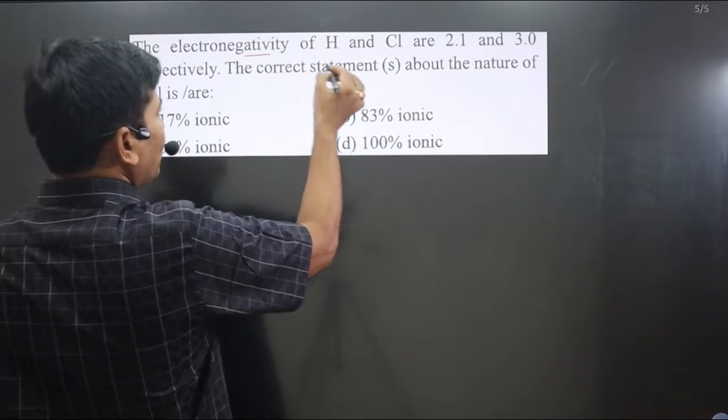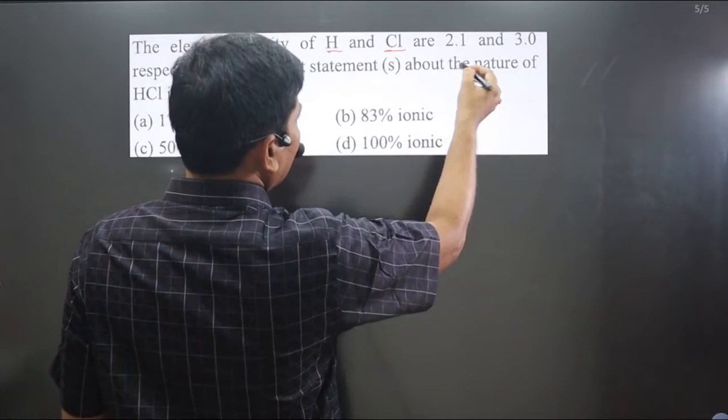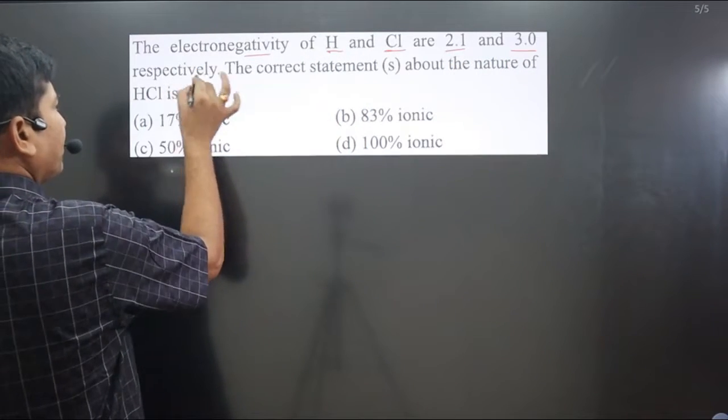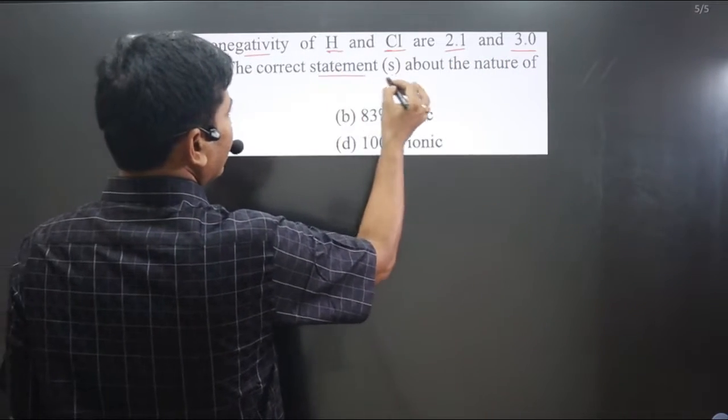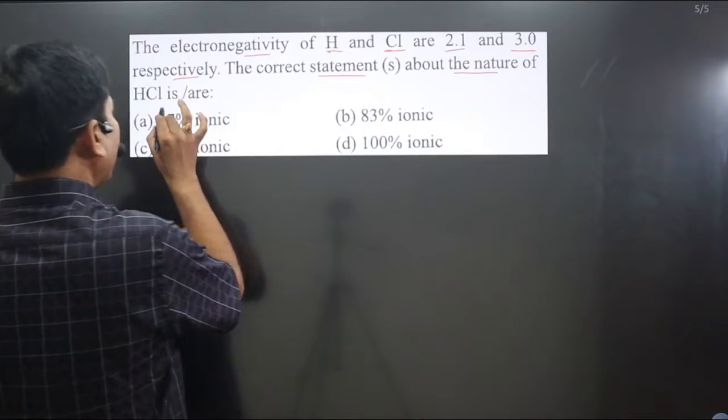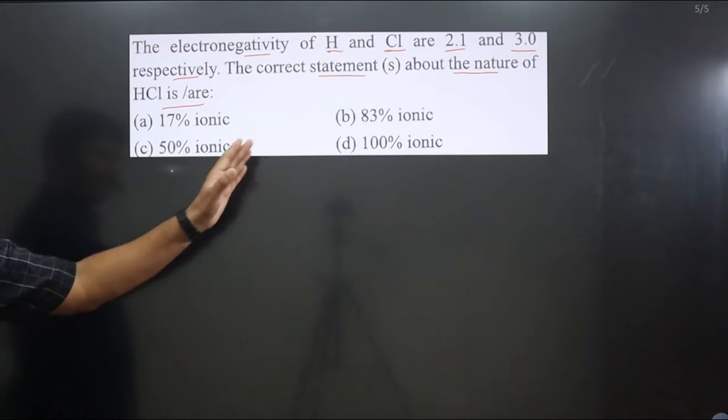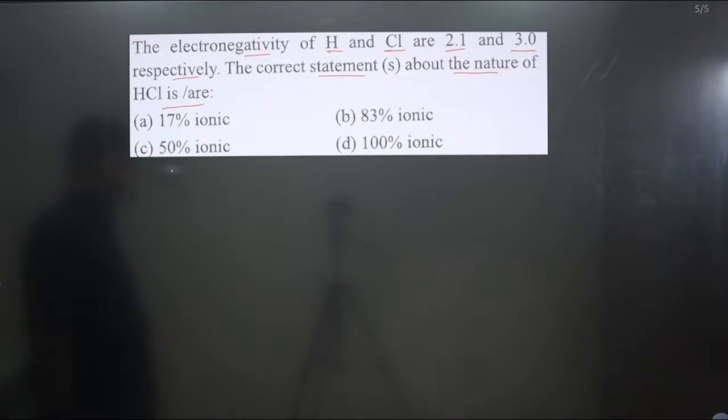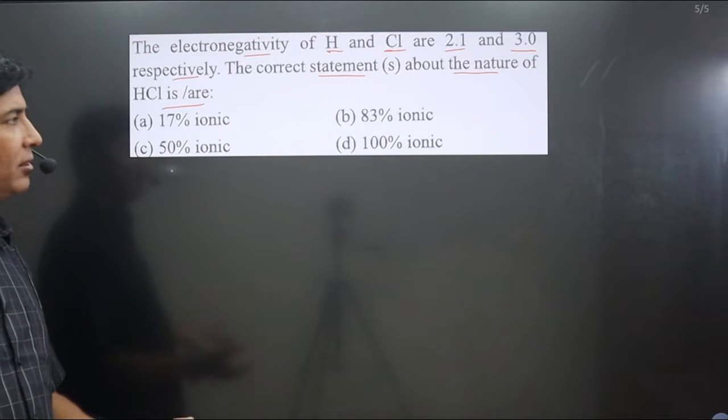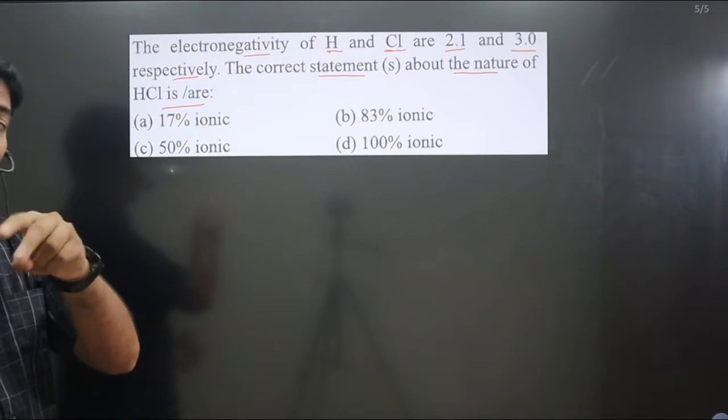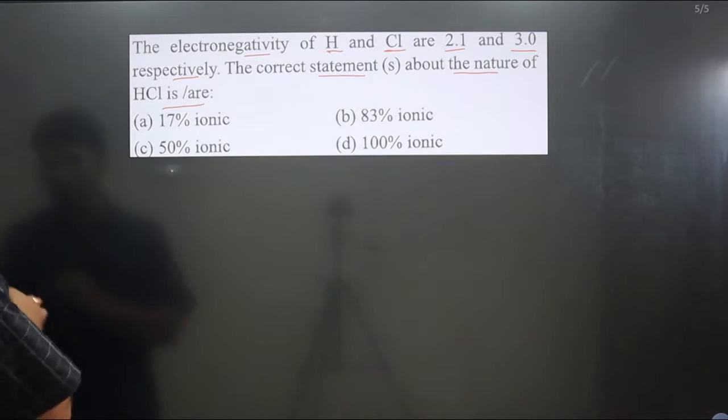The question says electronegativity of hydrogen and chlorine are 2.1 and 3.0 respectively. The correct statement about the nature of HCl is asking about ionic character. We have to calculate ionic percentage. Since electronegativity of two different elements is given, we can apply the ionic percentage formula.